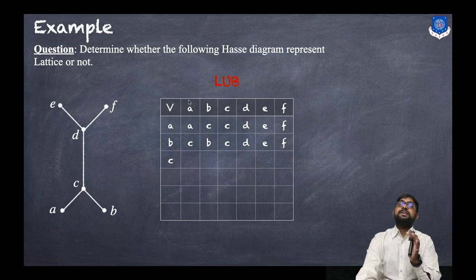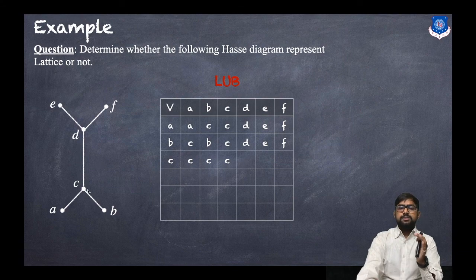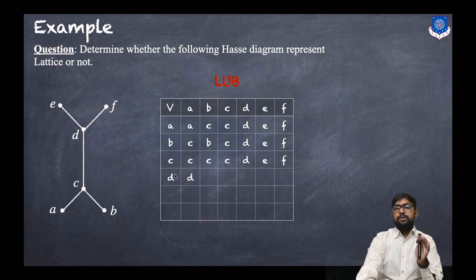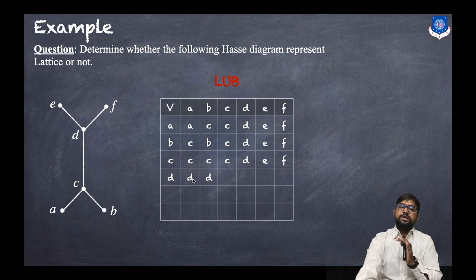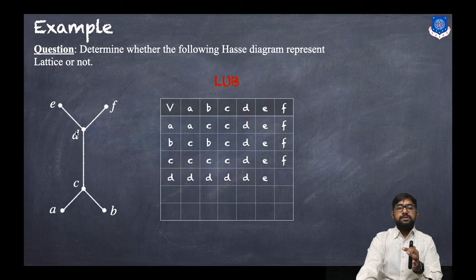For row c: LUB(c, a) = c; LUB(c, b) = c; LUB(c, c) = c; LUB(c, d) = d; LUB(c, e) = e; LUB(c, f) = f. For row d: LUB(d, a) = d; LUB(d, b) = d; LUB(d, c) = d; LUB(d, d) = d; LUB(d, e) = e; LUB(d, f) = f.